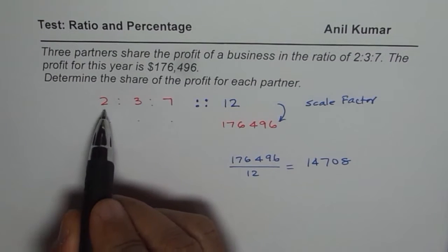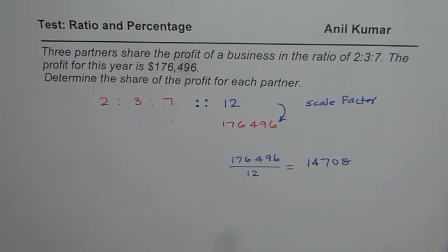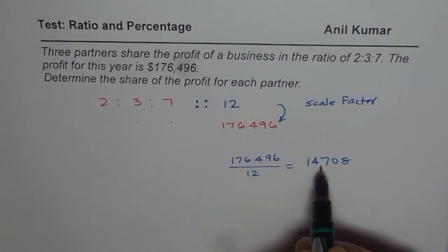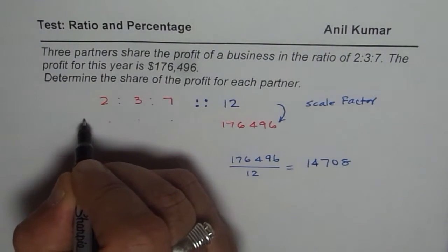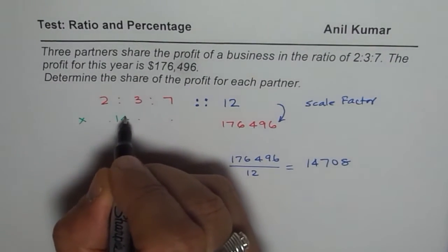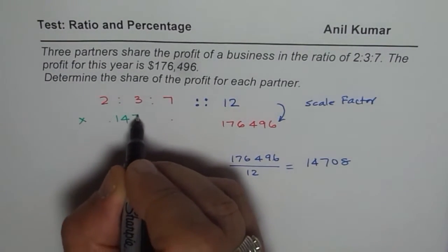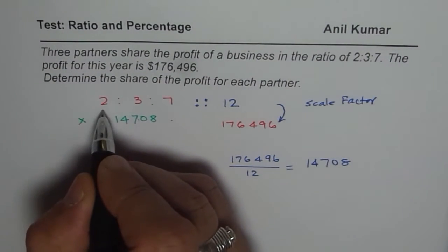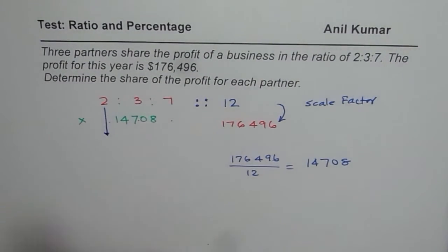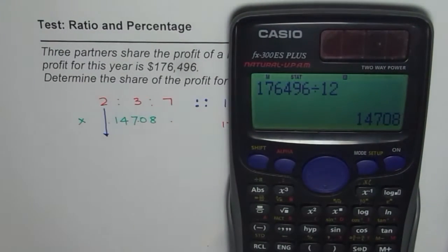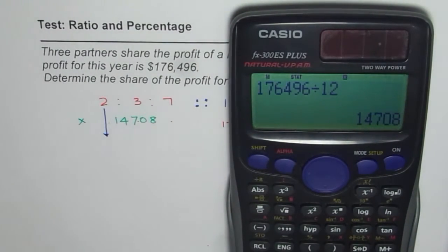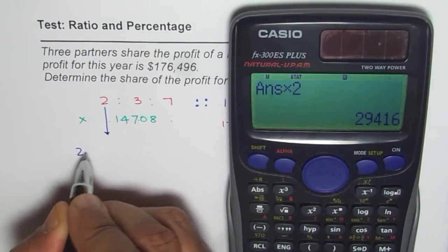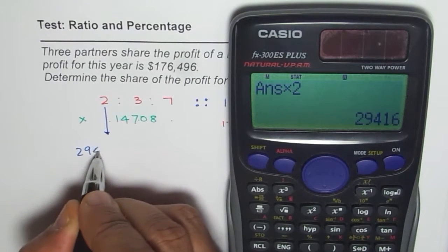It really means that all these amounts should now be multiplied by 14708. So, we should multiply them all by 14708 to get the results. Then we get our answers. So, when you do 2 times 14708, what do you get? Let us multiply 1 by 1. We already have 14708 times 2 equals to, so the first person gets a share of 29,416.